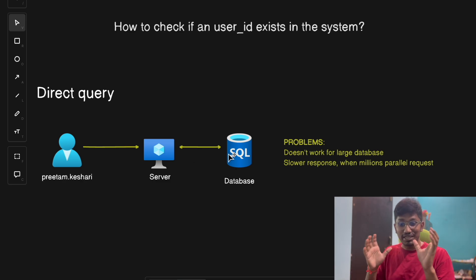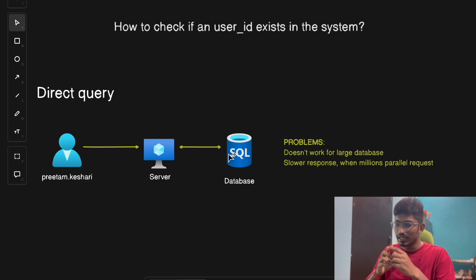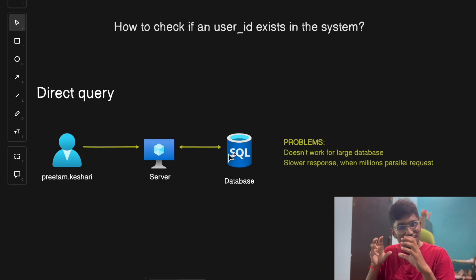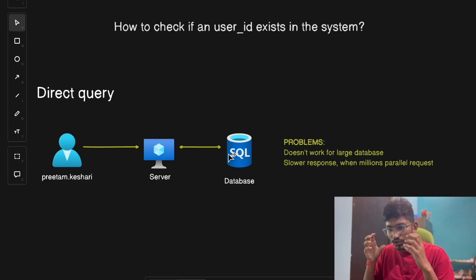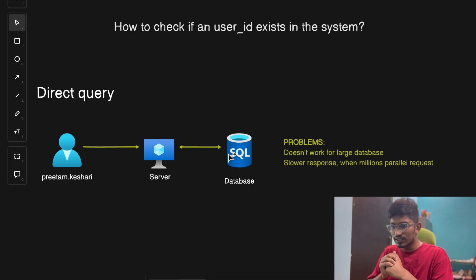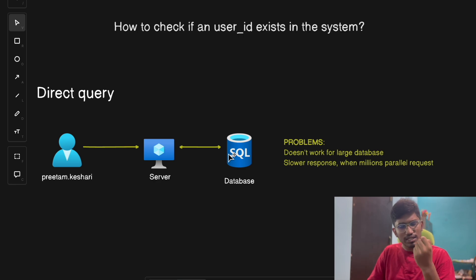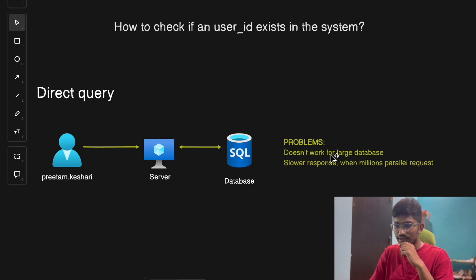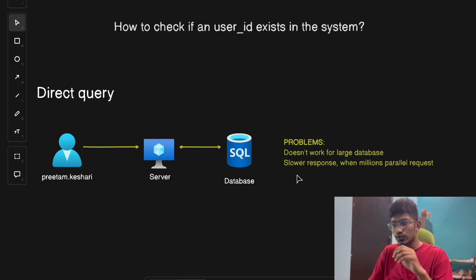But hold on — if you have billions of records, searching through the entire database can be very time-consuming and very slow. And if millions of people are searching for usernames concurrently, you put a lot of pressure on the database and the system will break down. Performance will be drastically reduced, causing very slow response times or system crashes under too much load. This approach won't work for a large database with millions of parallel requests.